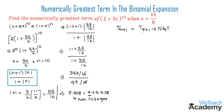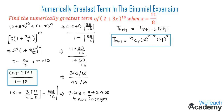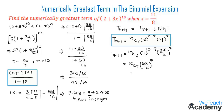Let us find the value of T_{7+1} using the formula T_{r+1} = nCr × x^(n−r) × y^r. Replacing the values with n=10, r=7, x=1, and y=3x/2, we get T_8 = 10C7 × 1^(10−7) × (3x/2)^7 = 10C7 × (3x/2)^7. Therefore the numerically greatest term of (2+3x)^10 is 2^10 × 10C7 × (3x/2)^7.